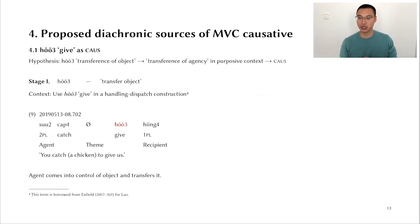I propose the pathway of semantic change in grammaticalization. And let's look at them one by one. So the first one, I propose that the hǎi give construction started this way. The hǎi verb begins as a verb meaning to transfer an object. And then it gets this meaning of transference of agency in purposive context, which gives us the meaning of the marker. So there are four stages of this development. The first stage is we use hǎi in the literal meaning of giving someone something in the Handling Dispatch construction. Example number nine, you catch a chicken to give us. Now I know that there is a sense of benefactiveness in this example, but there's no doubt that hǎi give at least conveys the meaning of the transference of object. The agent comes into control of an object and transfers it to the recipient.